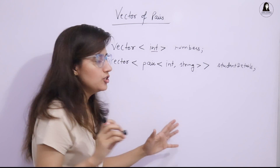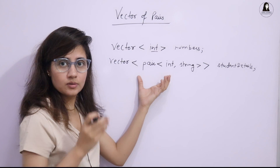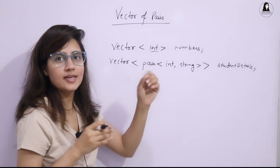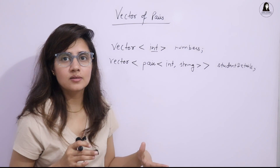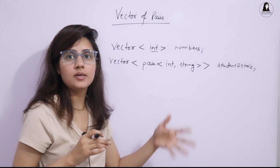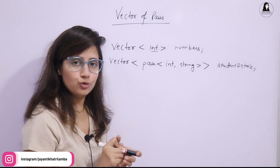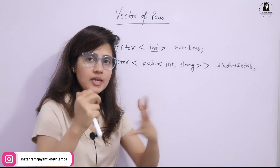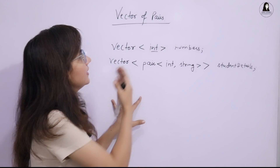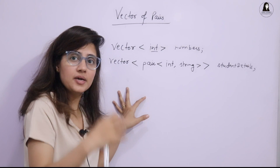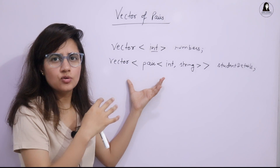The same operations you can apply on a vector of pairs as you do on regular vectors: push_back, pop_back, erase, delete, swap, clear, and all the iterators — begin, cbegin, cend, rbegin, rend. A vector of pairs is a dynamic array which contains pairs instead of primitive data types.